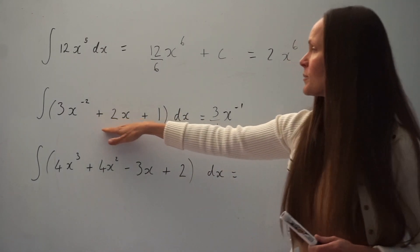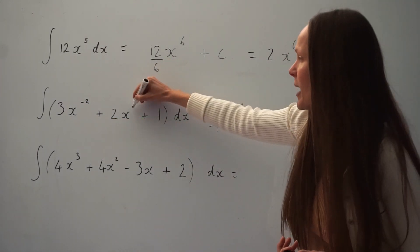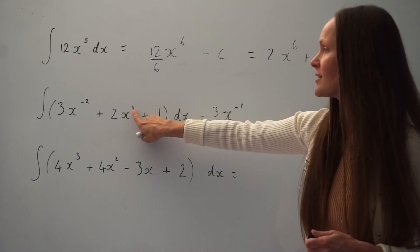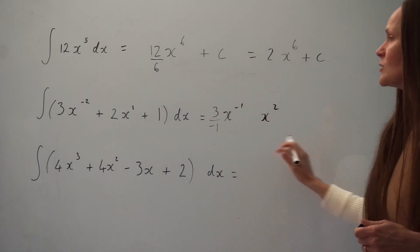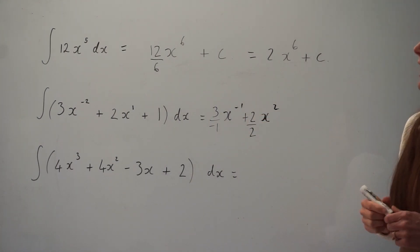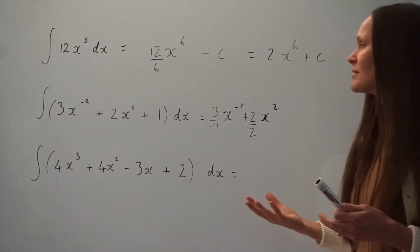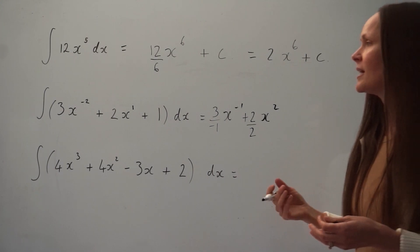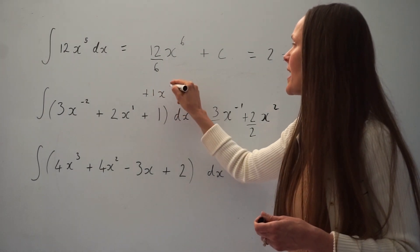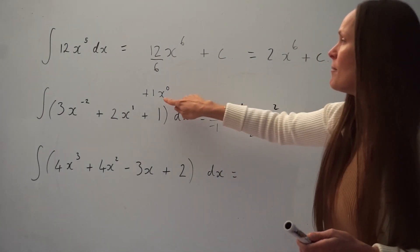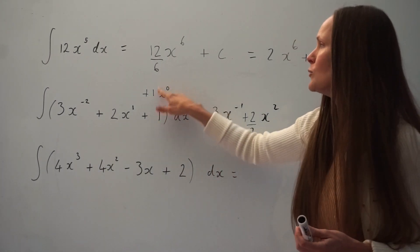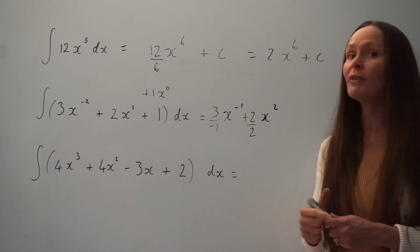So the first term gives us 3 divided by negative 1. Then for the plus 2x term, remember this is the same as 2x to the power of 1. If we raise that power by 1 we get x squared, and we divide 2 by the new power of 2. For the final term, plus 1, it's helpful to think of it as 1 multiplied by x to the power of 0 — remember anything to the power of 0 equals 1, which is why we don't usually write it.